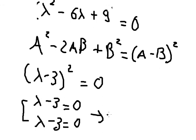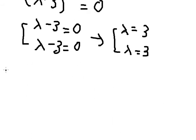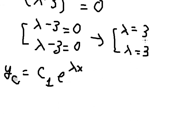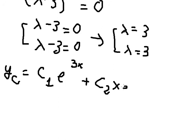Moving to the right-hand side, we get λ equals 3 and λ equals 3 — two repeated roots both equal to 3. So the complementary solution is yc = c₁·e^(3x) + c₂·x·e^(3x), because we have two identical roots.